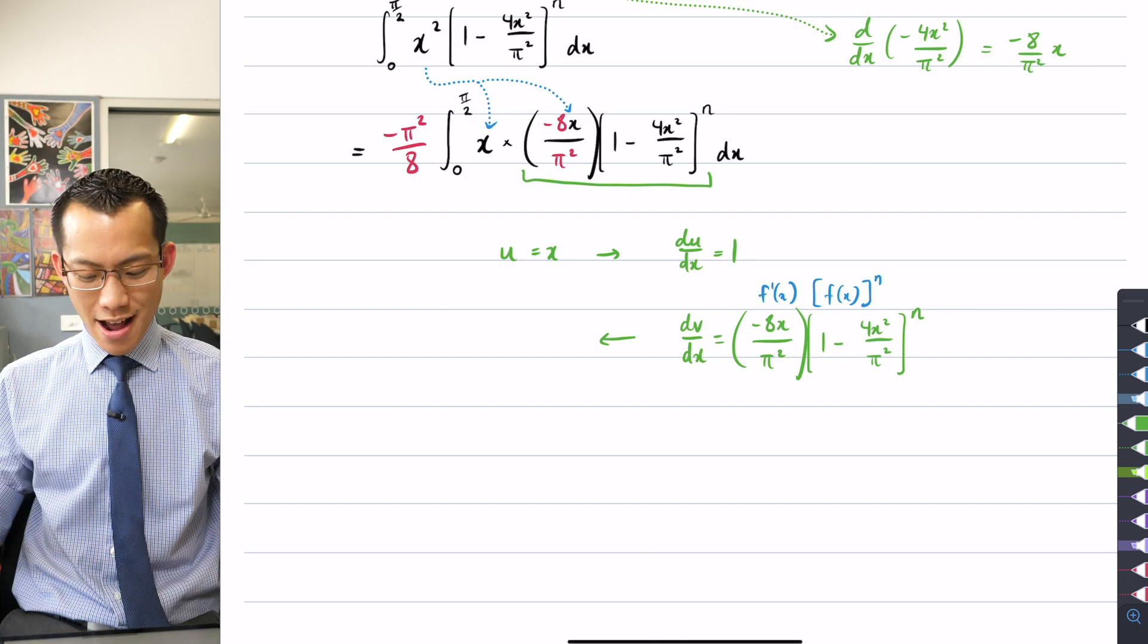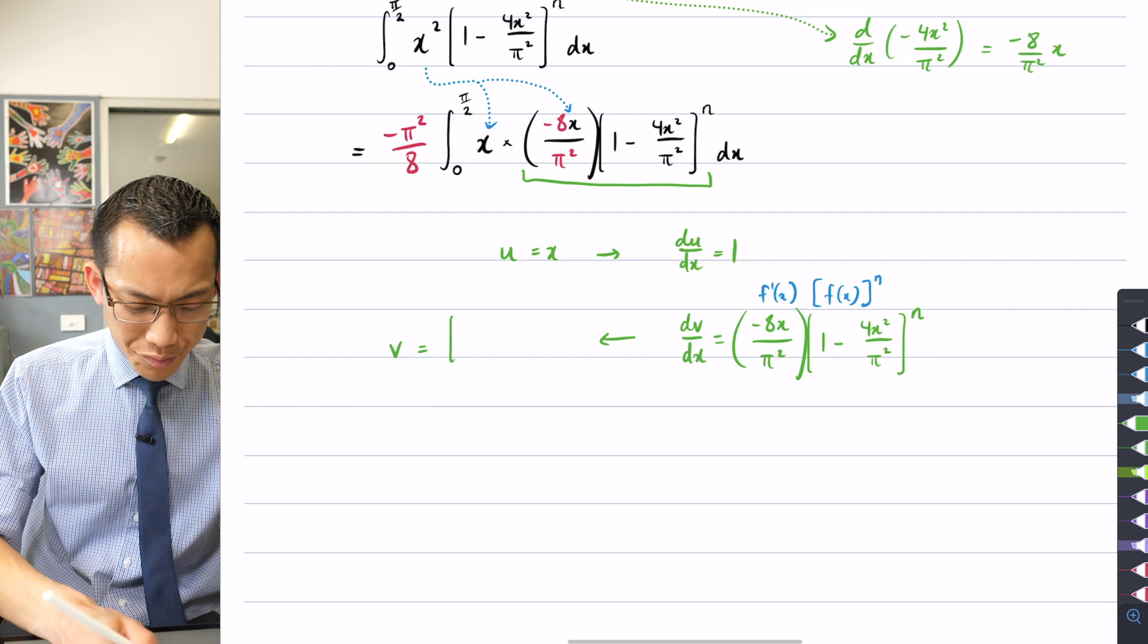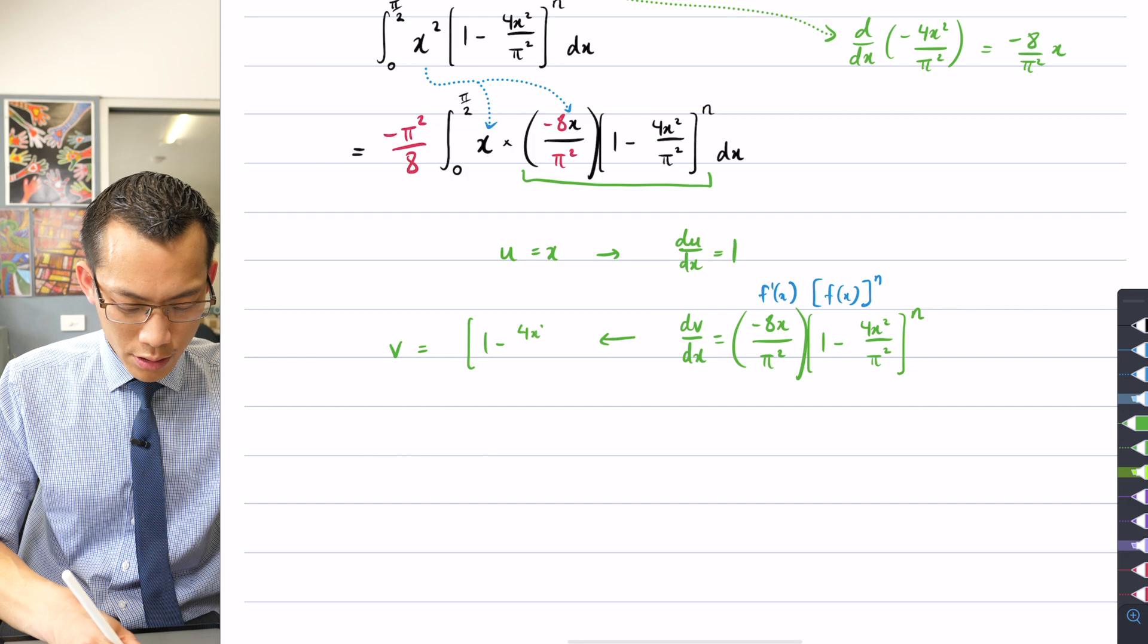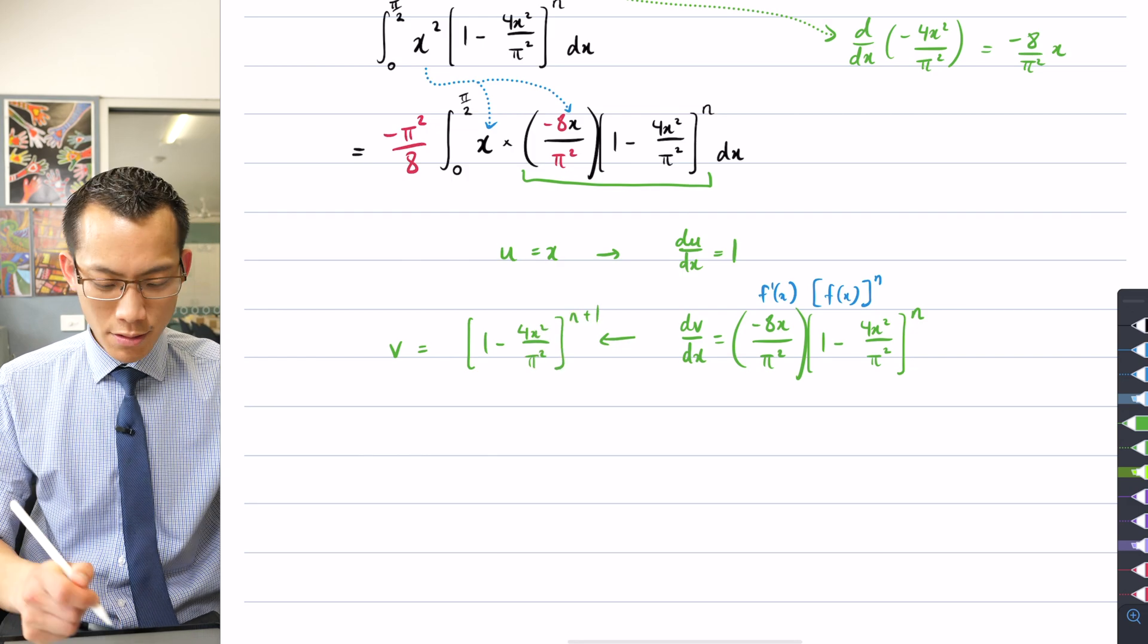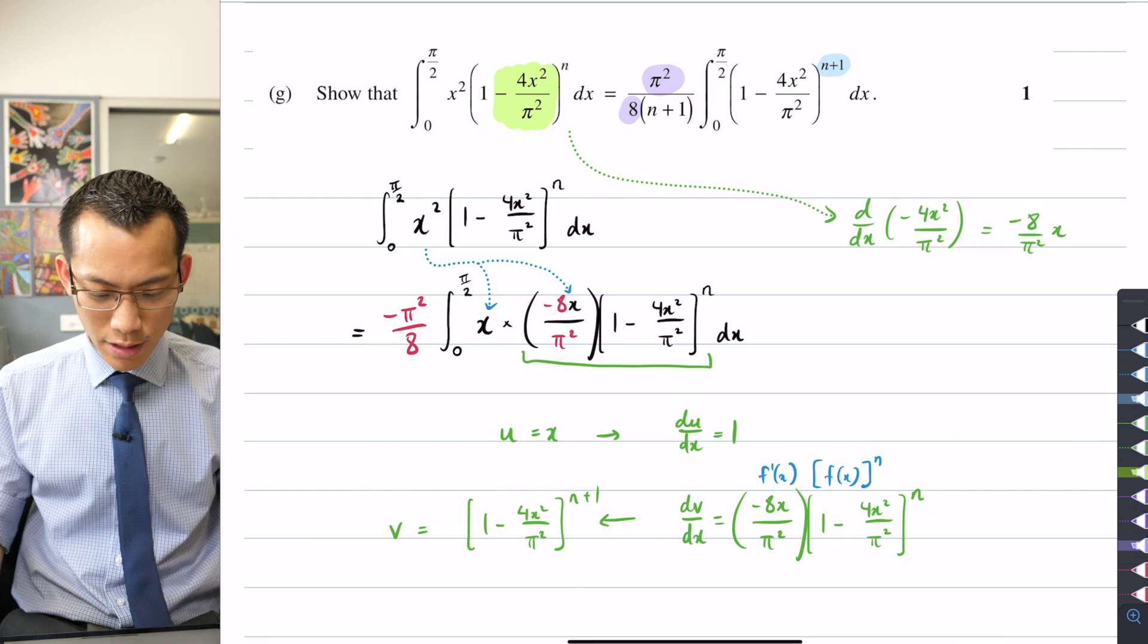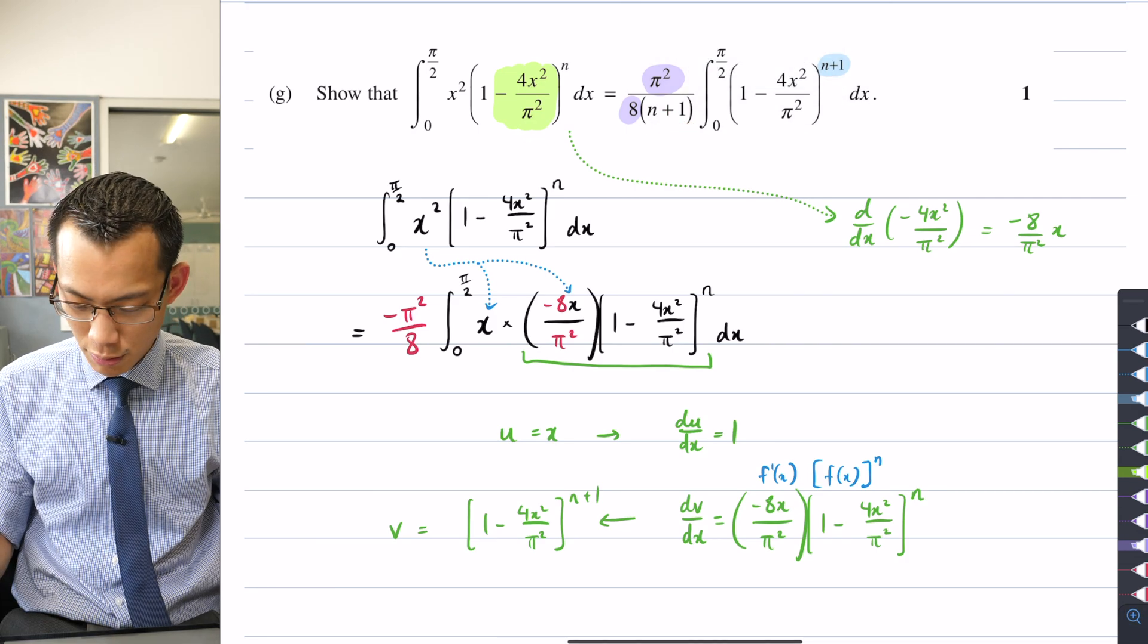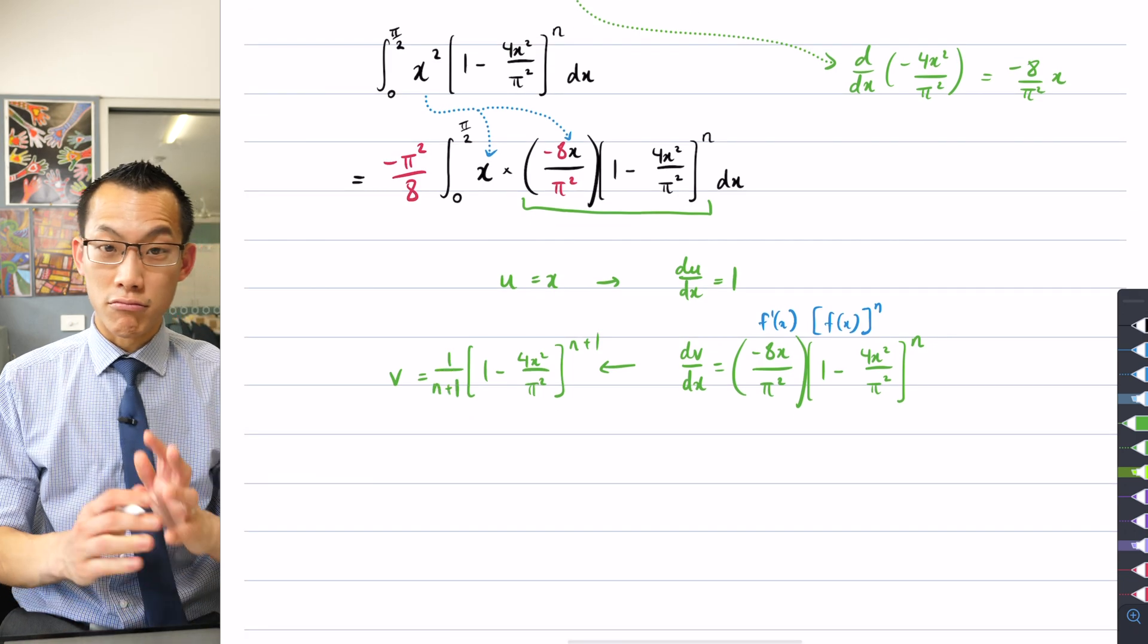Then, when I integrate up, because this is f' and this is f(x) raised to the power of n, all I need to do is increase the power by 1 and then divide by the new power. When I divide by the inside derivative, that's right there, it just kind of cancels out. So therefore, I'm going to work out v. I first increase the power by 1, so that's going to give me (1 - 4x²/π²) to the n+1, which is comforting because that's what I wanted right there. But then I also need to divide by n+1, which is also encouraging because there it is—there's the n+1, it's supposed to appear. So I'm going to go 1/(n+1).